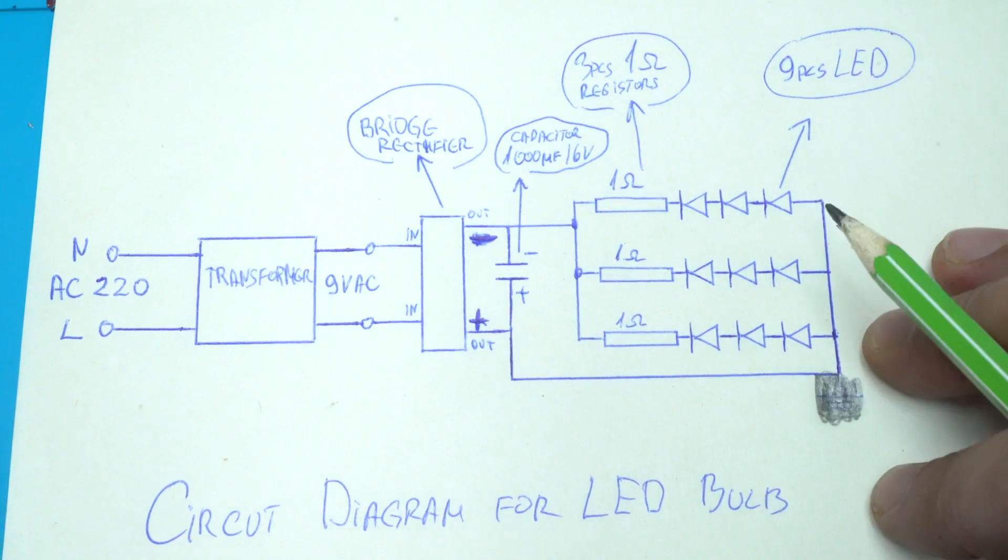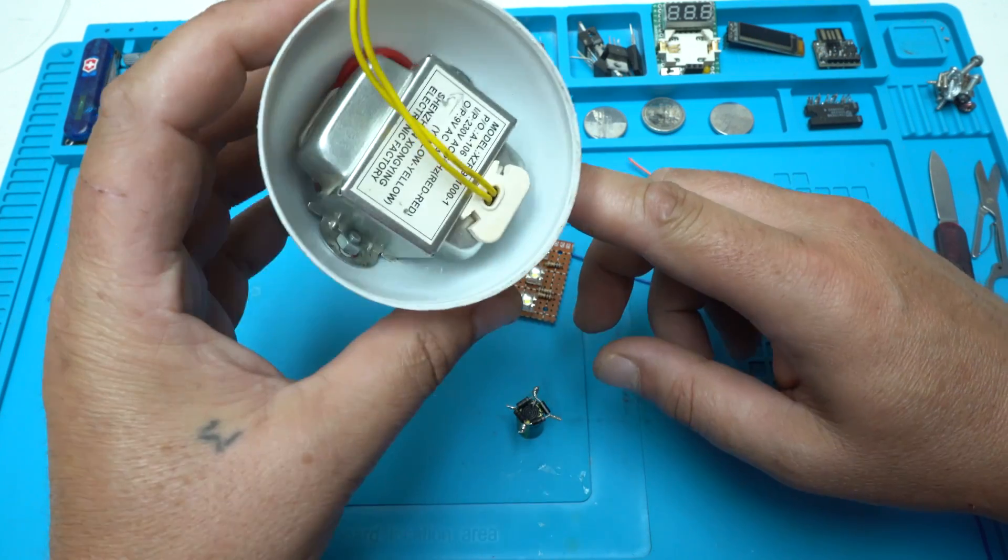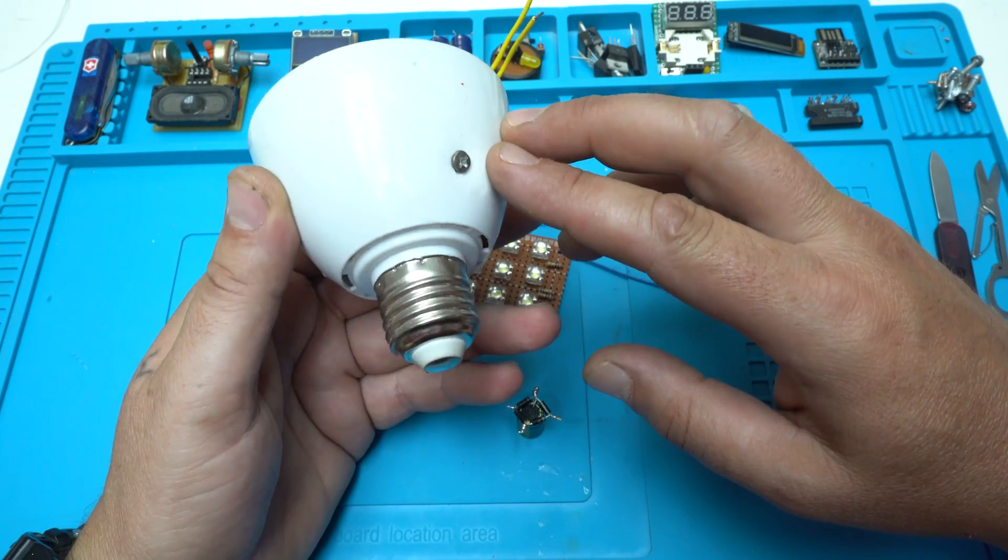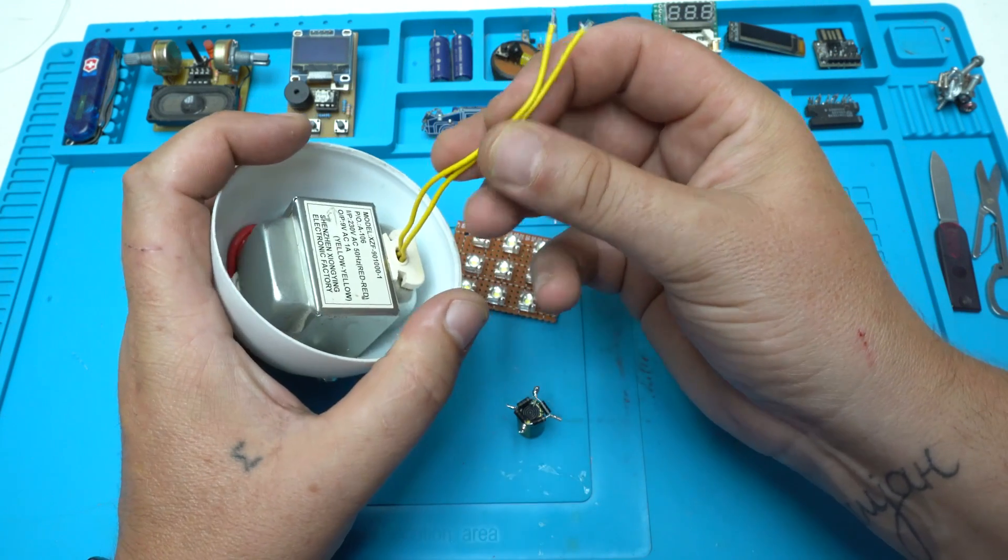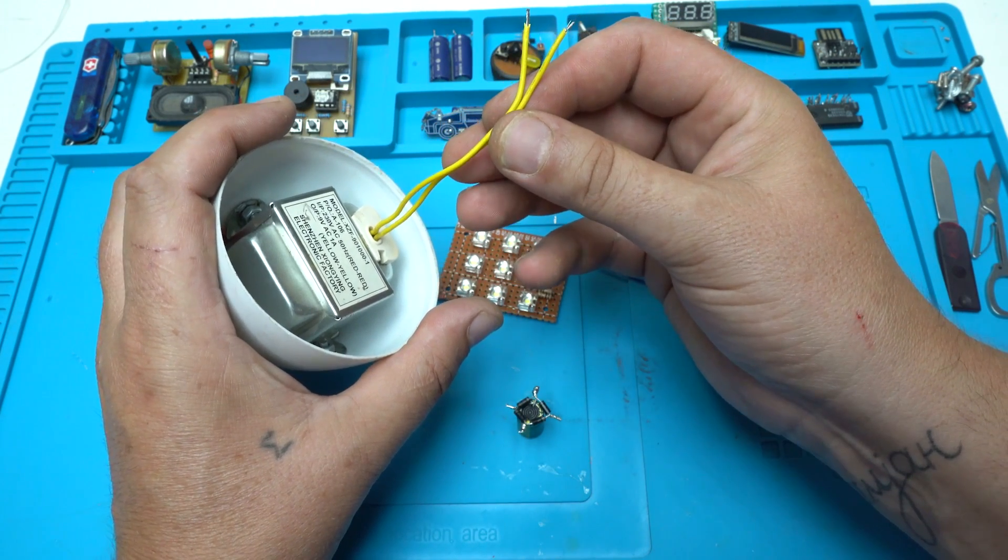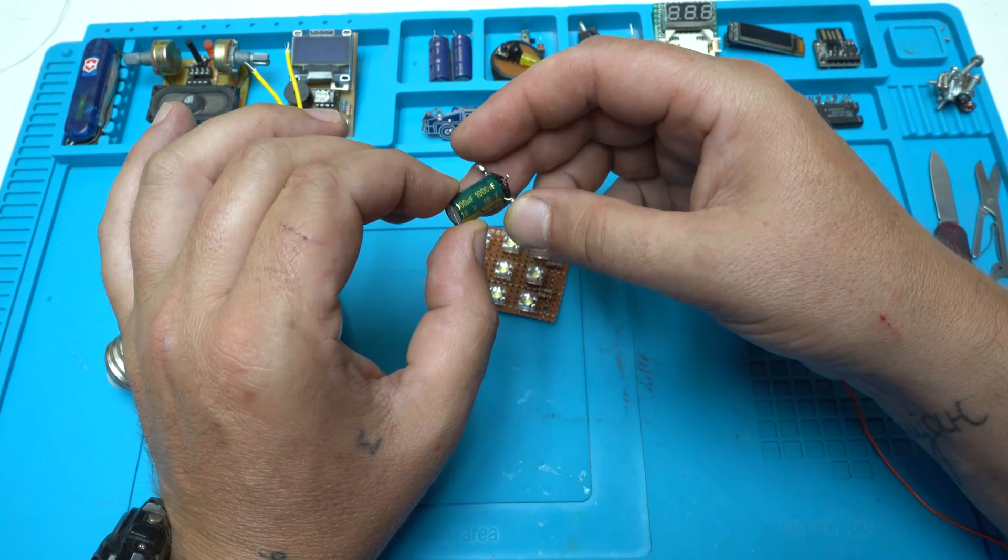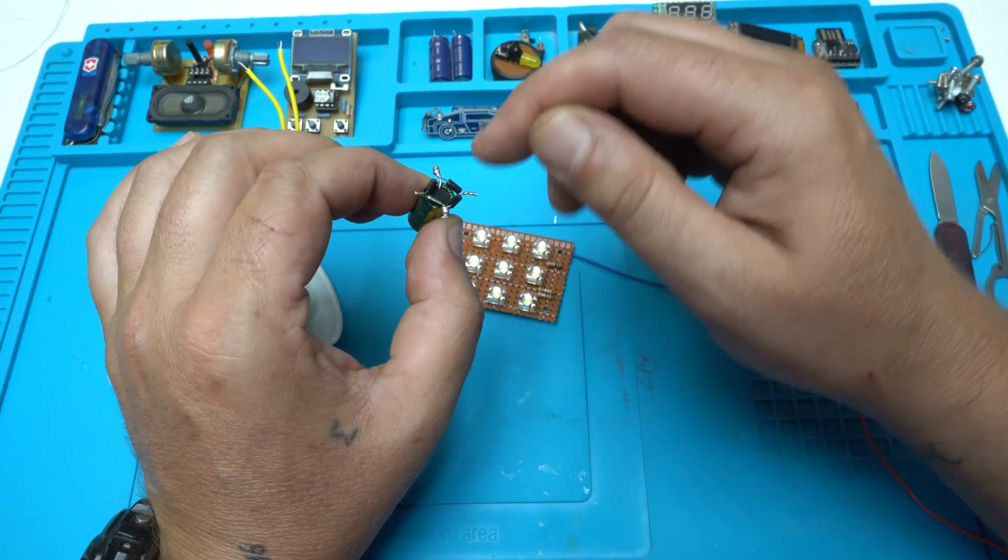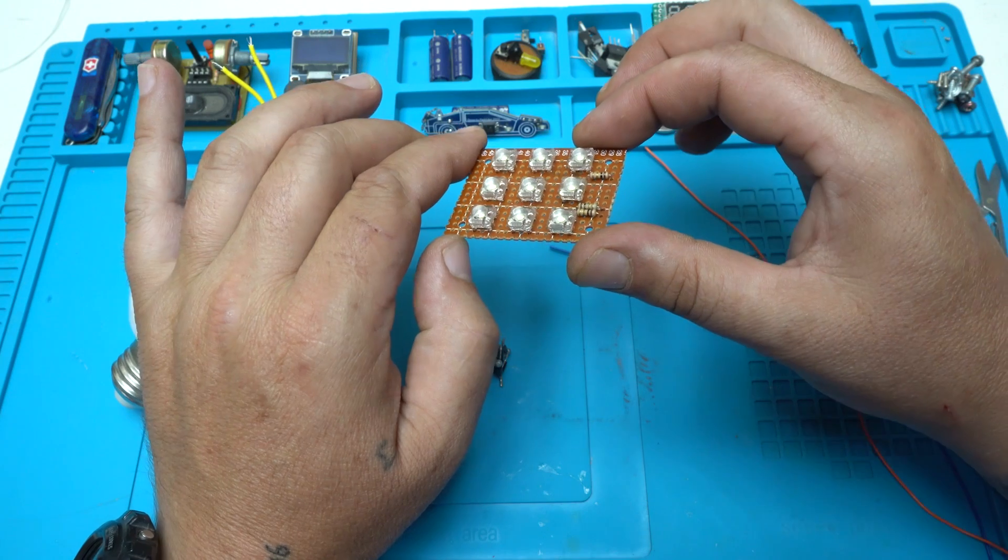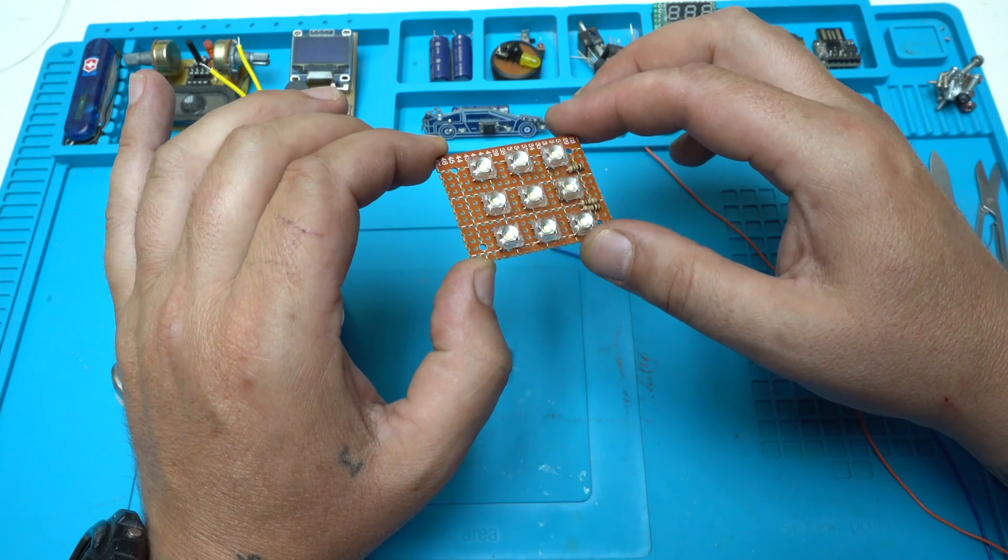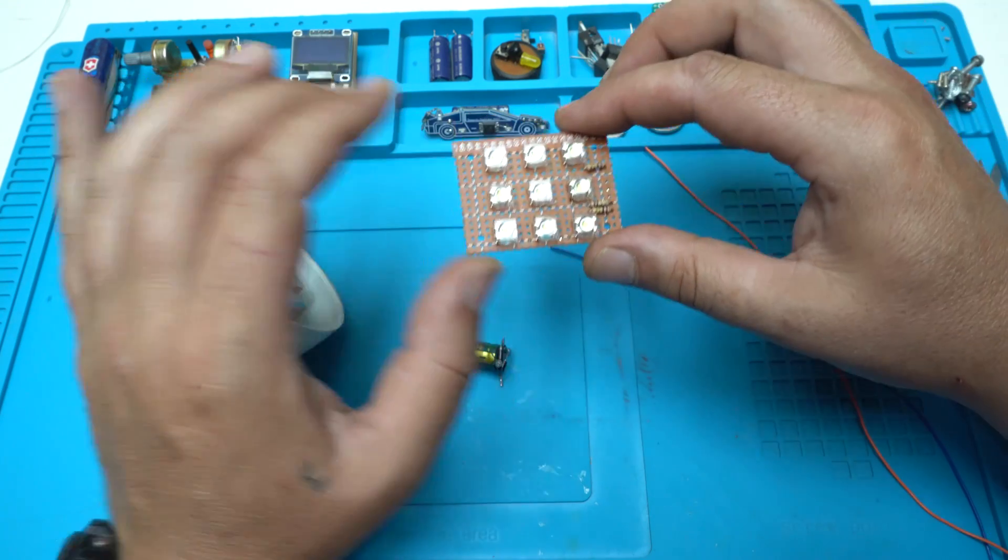I got everything prepared. Here is the base with the transformer inside and I fixed it with the screws. It's not going anywhere. These two wires are giving AC voltage of nine volts that need to be connected to the bridge rectifier that I made out of four diodes and one electrolytic capacitor. From here positive and negative wire will go into the LED board made out of nine Piranha LEDs with total watts of 4.5 watts. Let's connect everything.